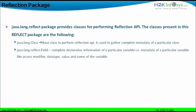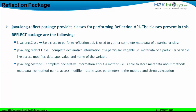There is another class called 'Field'. The Field class gives complete declarative information of a particular variable — it gives metadata information like access specifiers or modifiers used with the variable, data types of the variable, the values of the variable, and the name of the variable. Similarly, there is another class called the 'Method' class in Reflection API. The Method class gives complete declarative information about the method — its name, access modifiers, return types, the parameters used, and any exceptions thrown by that particular method.